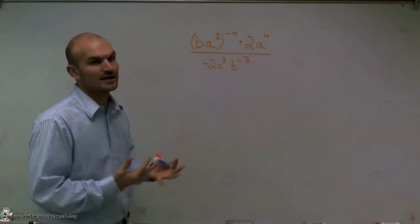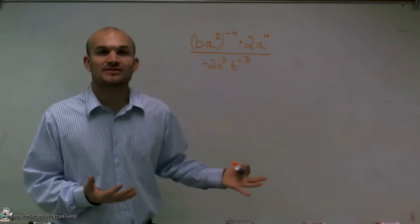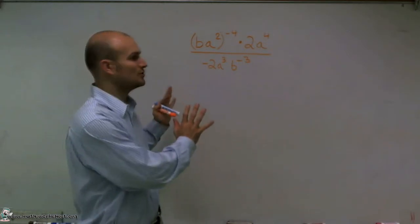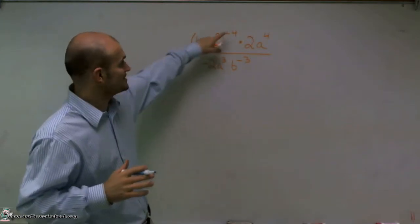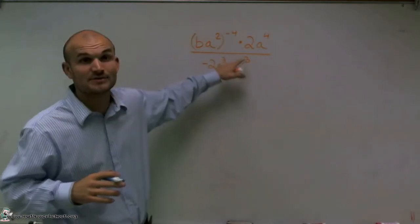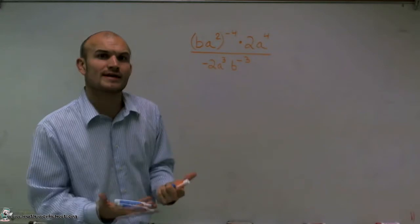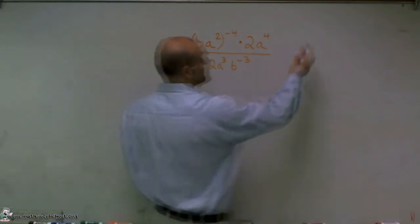So the first thing I want to do is remind you of a couple properties of exponents that we're going to use to hopefully try to make this a little bit easier on you. So the first thing we need to look at is negative exponents. I see that I have a negative exponent here and a negative exponent there. So we need to understand how our negative exponents going to affect our problem.